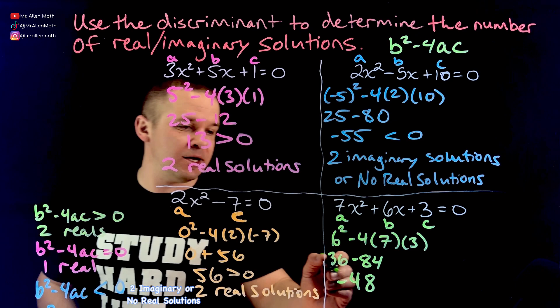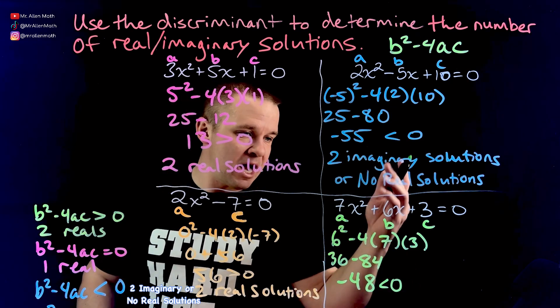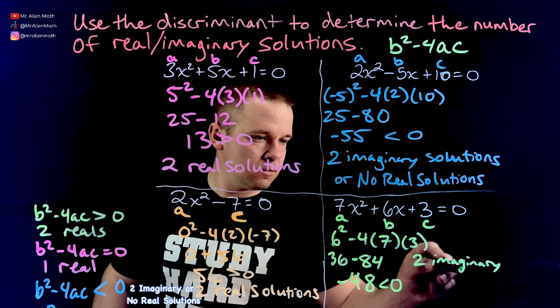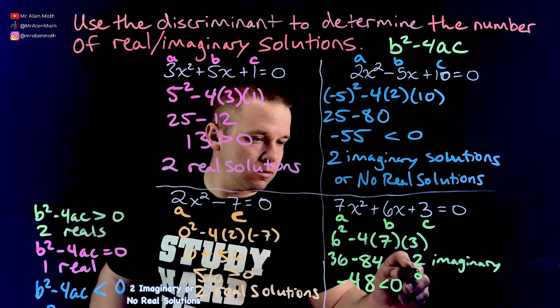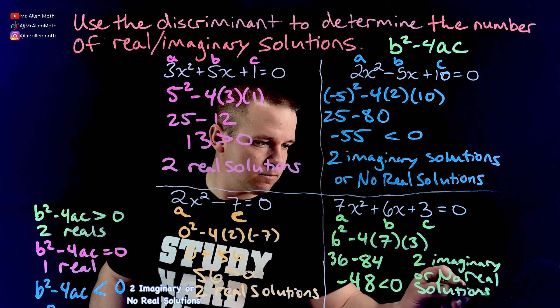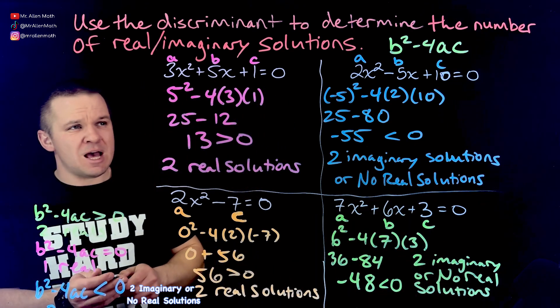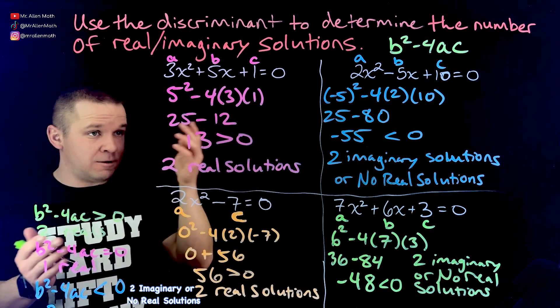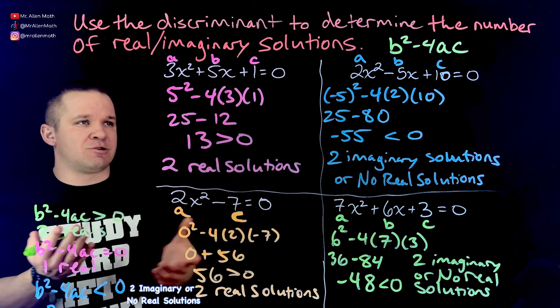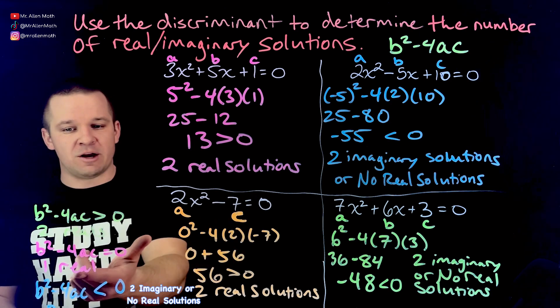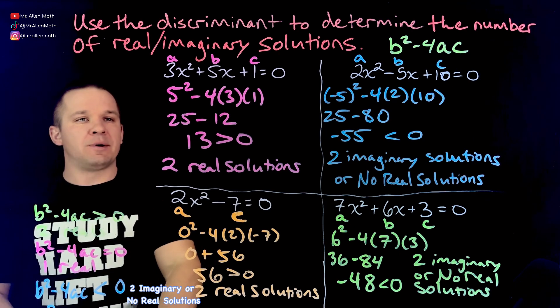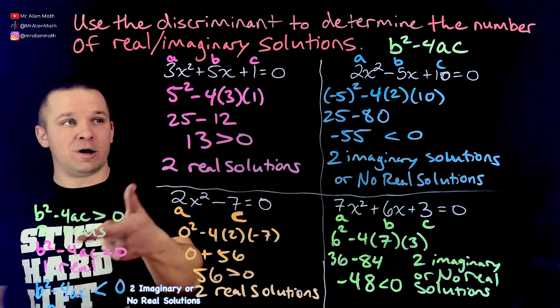All right. So negative 48. What does that mean? Well, it is less than zero. It's a negative number. So we get two imaginary, or no real solutions. Cool. There we go, guys. I guess the only scenario we didn't really have here was only one real solution. But if my discriminant ended up being zero, then I know that it's one real. So just look out for that. We only have the two reals and two imaginary situations here, but that's all right. You know, it'll happen at some point. You'll get one real, then bippity boppity. We're good to go.